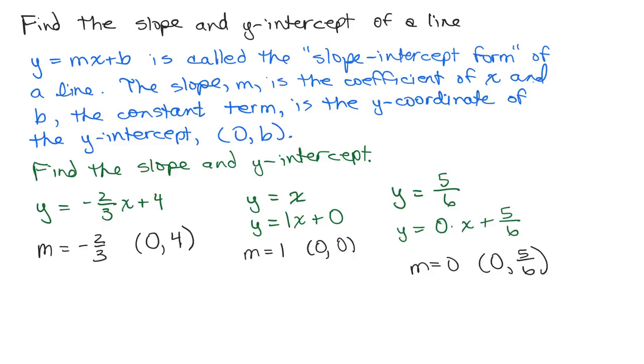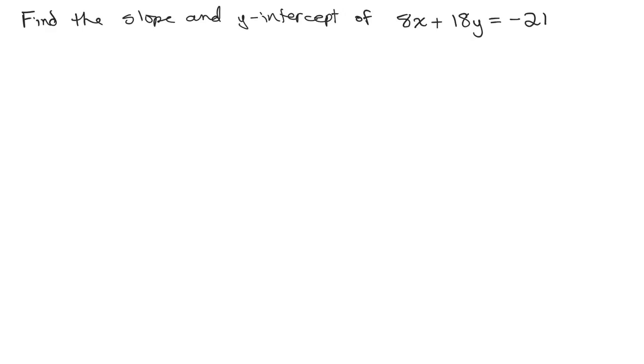What about if it's not in that form? Let's find the slope and y-intercept of 8x plus 18y equals negative 21. Now that's not in slope-intercept form. It's in this form, y equals mx plus b. So we need to take this equation and solve for y so it looks like that.